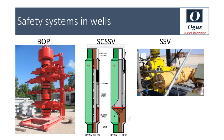SCSSV, or surface controlled subsurface safety valve, is a hydraulically operated device that allows the well to be shut in from the surface in case of loss of well control during production. By pulling a knob on the wellhead control panel, the operator can release the hydraulic pressure that holds the downhole device open, thereby shutting the well. The upper master valve, and in some cases also the production wing valve, are made hydraulically controlled through the wellhead control panel — these are known as SSV or surface safety valve.